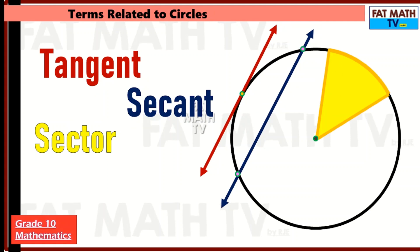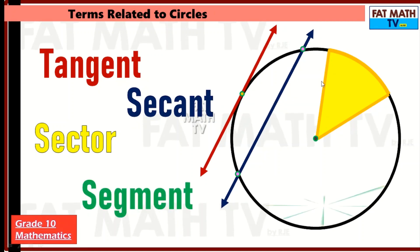A sector of a circle is like a slice of a pizza in a whole pie. So a sector has an area and it's a part of a circle. A segment is also a part of a circle, but it's made by a chord of the circle. This sector is made up of one radius, another radius, and an arc on the circle. But a segment is made of a chord and an arc.